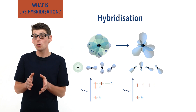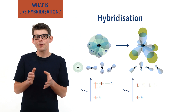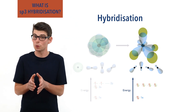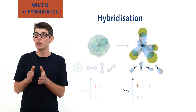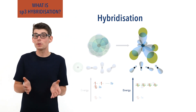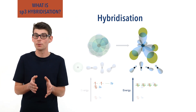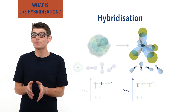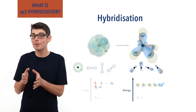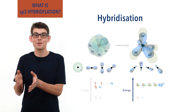Each new orbital forms a single sigma bond to another atom. The four new orbitals formed are slightly higher in energy than the 2s subshell and slightly lower in energy than the 2p subshell. The orbitals are described as hybrid as they are formed from different types of atomic orbital, and as sp3 because they are formed from one s orbital and the three p orbitals in carbon's outer shell, giving sp3.